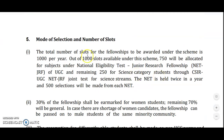Regarding the mode of selection: a total of 1000 slots are available under this scheme. 750 will be allotted for subjects under the National Eligibility Test, that is UGC NET JRF, and the remaining 250 for Science categories through the CSIR-UGC NET JRF joint test for Science streams. The NET is held twice a year and 500 selections will be made from each NET. Also, 30% of the fellowship shall be reserved for women students and the remaining 70% will be under the general category.